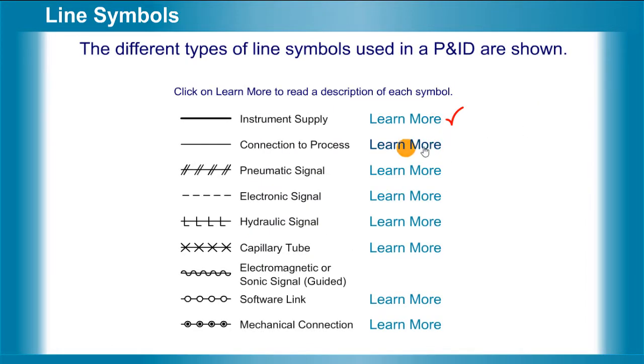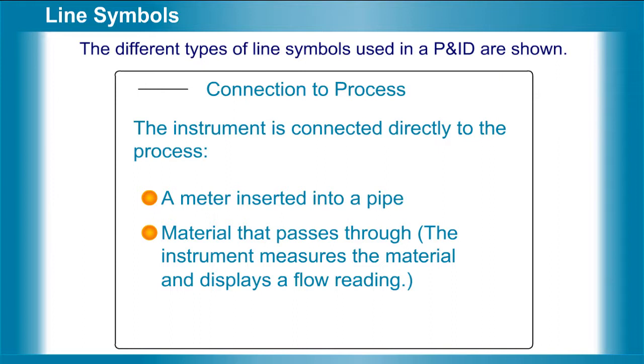Connection to process. The instrument is connected directly to the process. A meter inserted into a pipe. Material that passes through. The instrument measures the material and displays a flow reading.